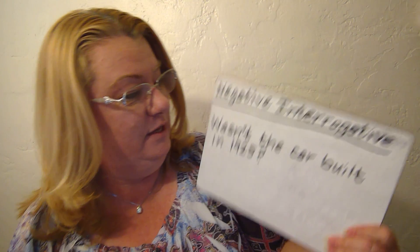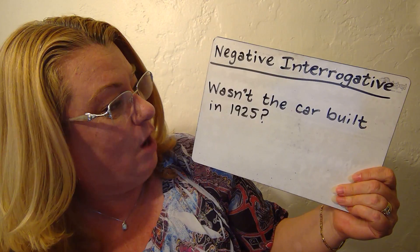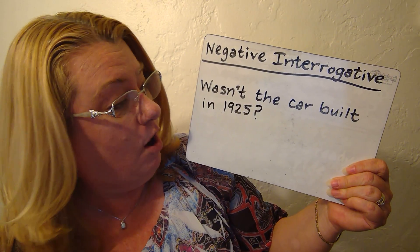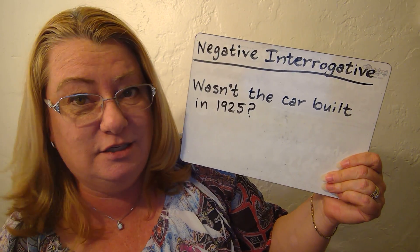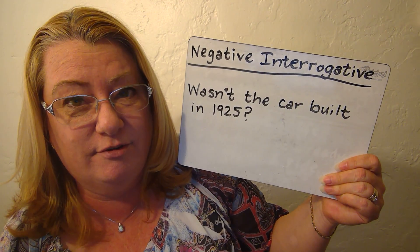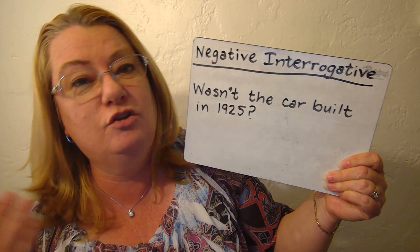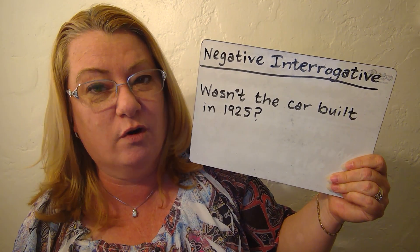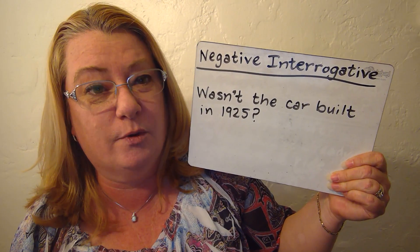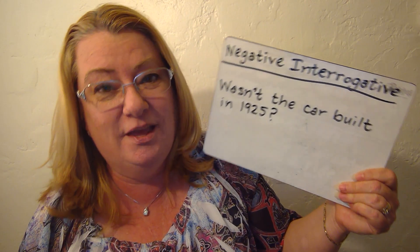These passive interrogatives can also be asked in the negative interrogative form: 'Wasn't the car built in 1925?' You can use all those WH-question forms in the negative as well. So these are examples of how to form the passive voice.